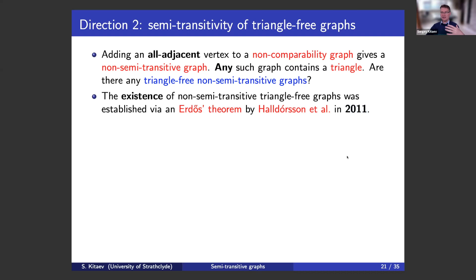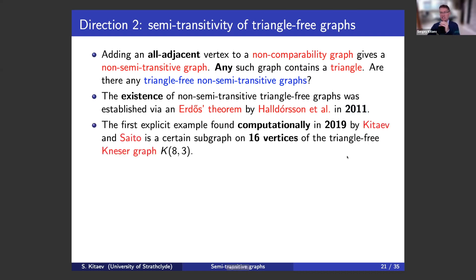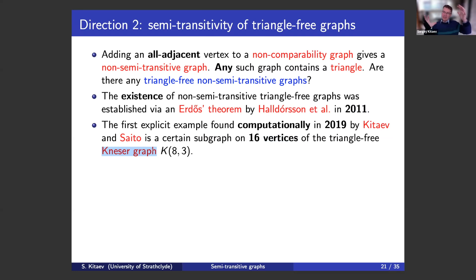Since 2011, nobody had seen any single explicit example of a triangle-free non-semi-transitive graph. The situation changed in 2019 when, in joint work with Akiru Saito from Japan, we actually found a graph on 16 vertices which was triangle-free and non-semi-transitive. This is also called a certain subgraph of the Kneser graph K(4,2). Kneser graphs are interesting by themselves, and we wrote a paper on semi-transitivity of Kneser graphs.